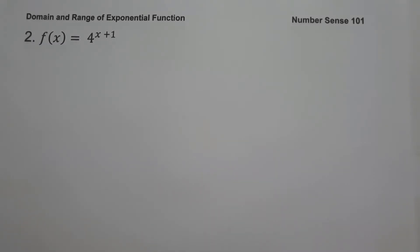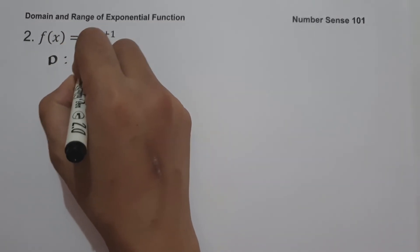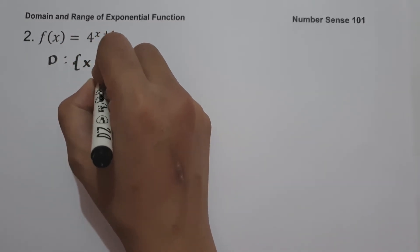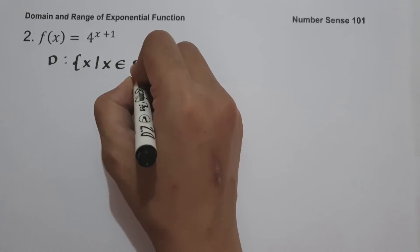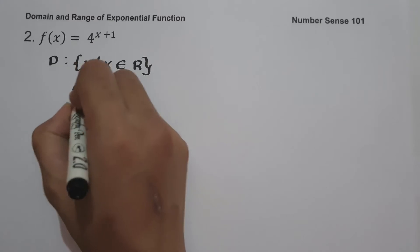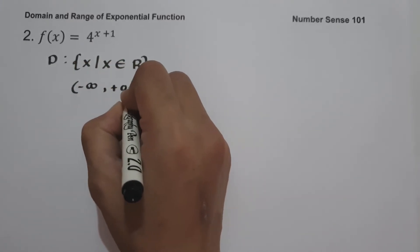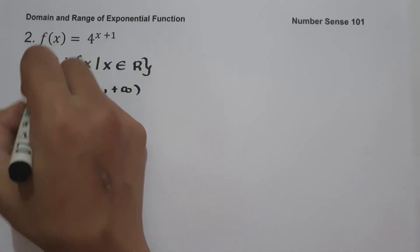On example number 2: f(x) = 4 raised to x plus 1. The domain of an exponential function is always all real numbers. So the domain is the set of x values such that x is the set of all real numbers, or in interval notation, from negative infinity up to positive infinity.